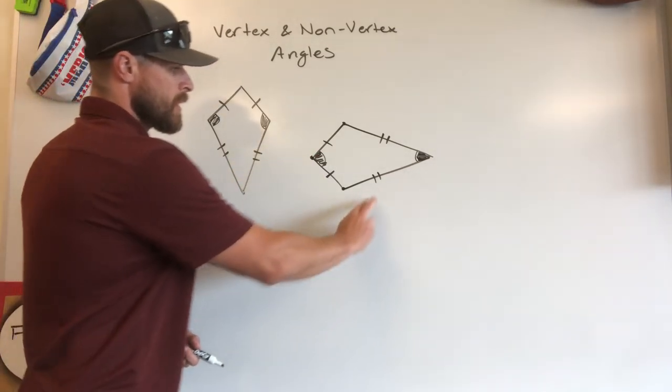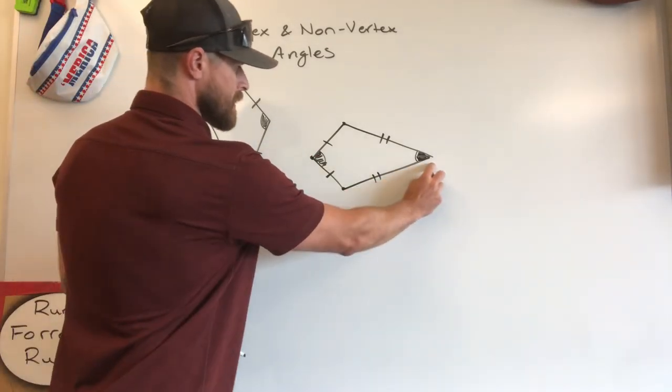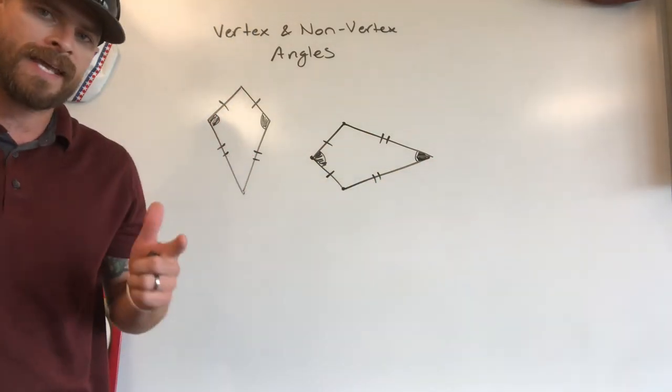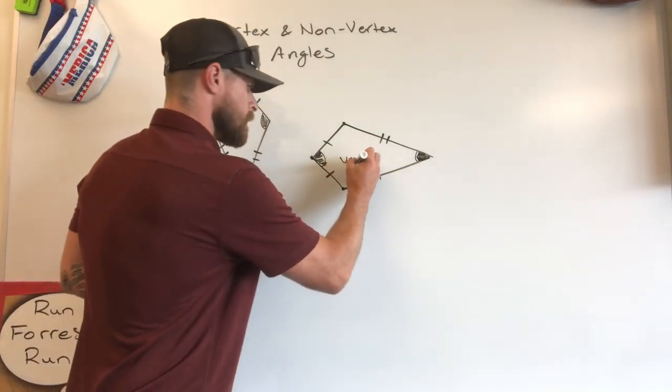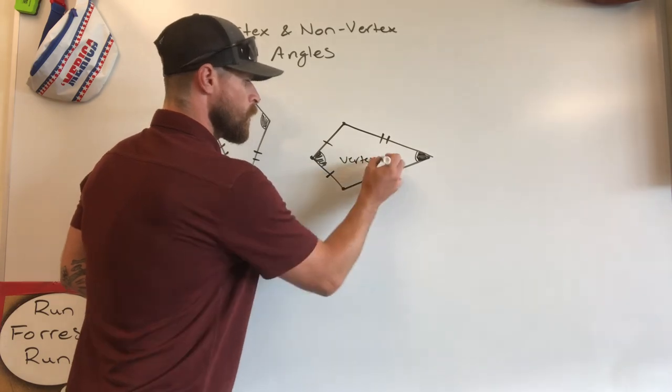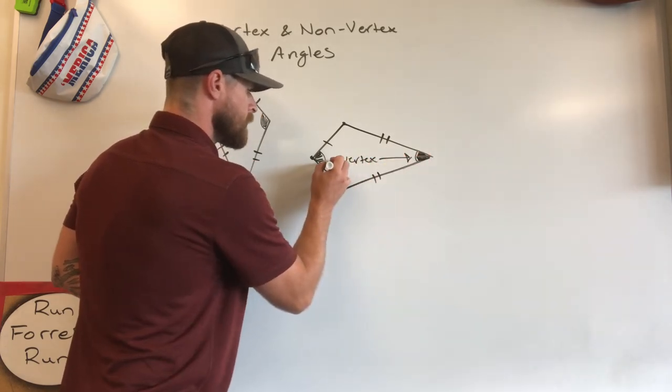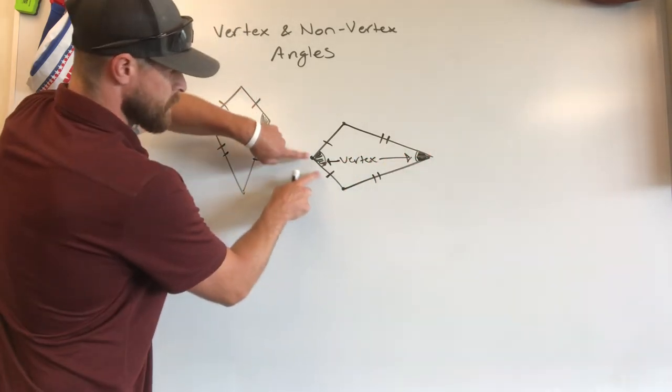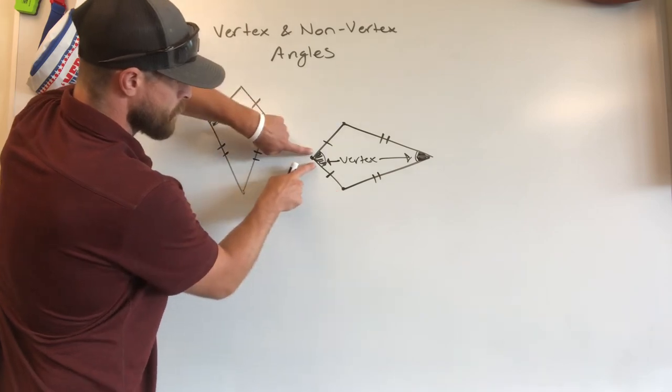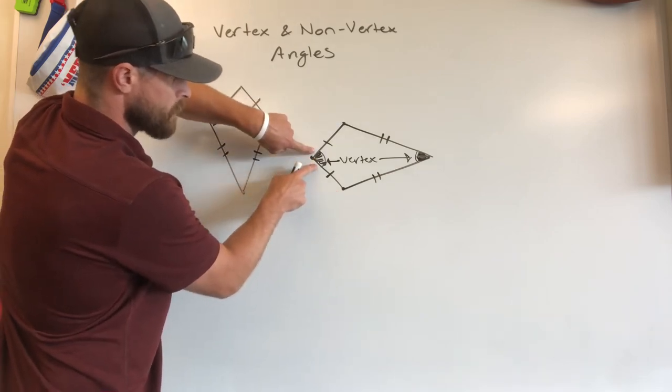One dash, one dash. Here we got two and two, meaning this side is congruent with this side. Vertex angles are formed when they are in between two congruent sides. So this side and this side form that angle, making it a vertex angle.